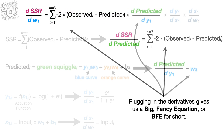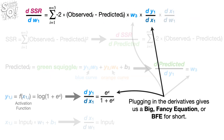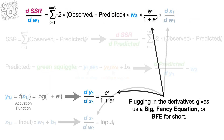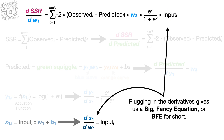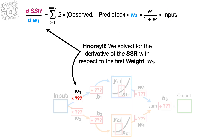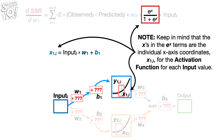Plugging in the derivatives gives us a big fancy equation, or BFE for short. Hooray! We solved for the derivative of the sum of the squared residuals with respect to the first weight, W sub 1. Keep in mind that the x's in the e to the x terms are the individual x-axis coordinates for the activation function for each input value.